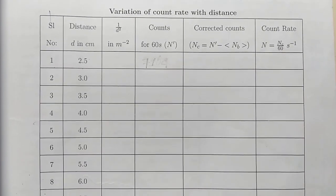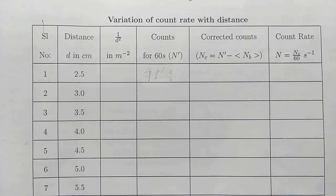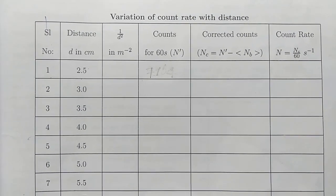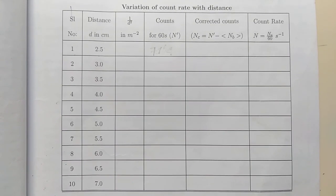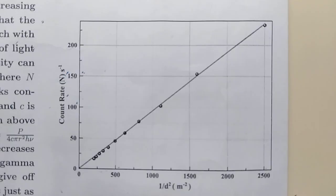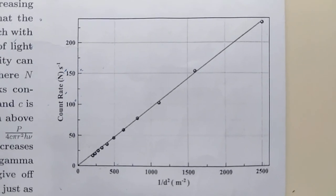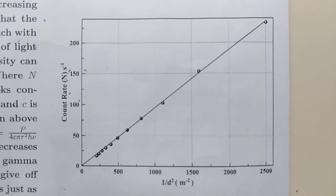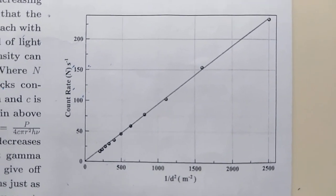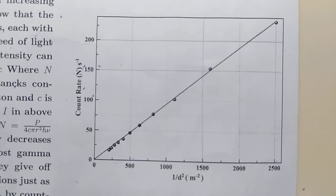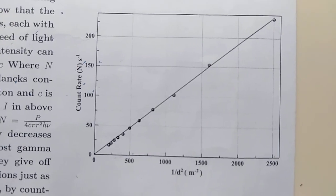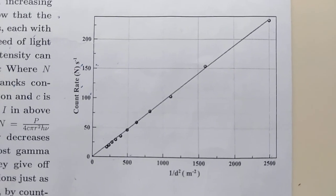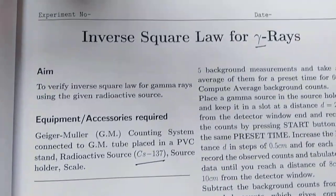Count rate can be calculated using the relation n = nc divided by 60. Now plot a graph of count rate versus 1/d². This comes out to be linear in nature. Since count rate versus 1/d² is linear in nature, this verifies the inverse square law for gamma rays using the given radioactive source. Hope this video was beneficial for you. Thank you.